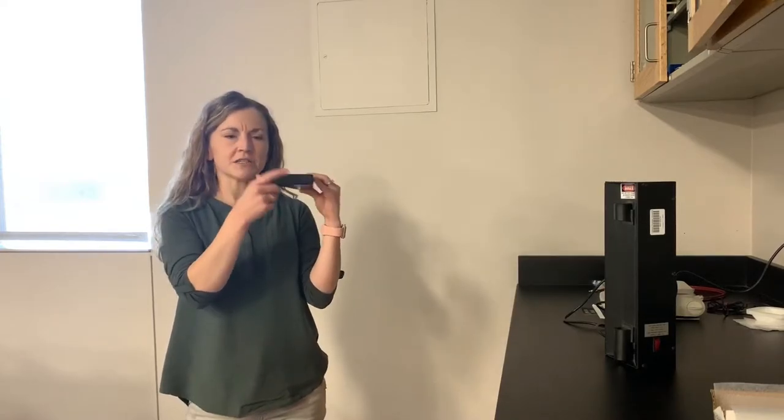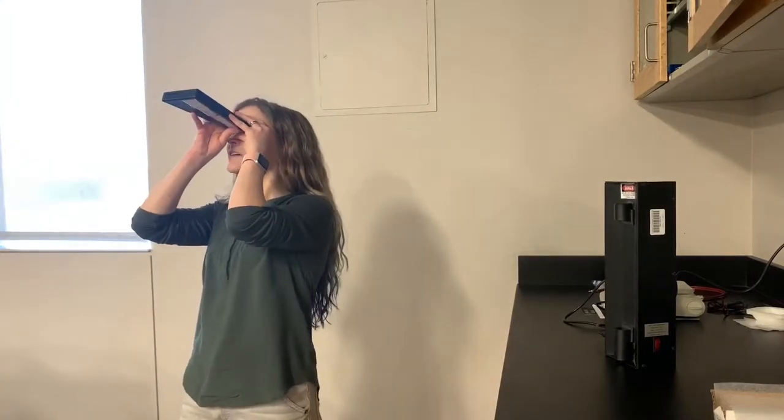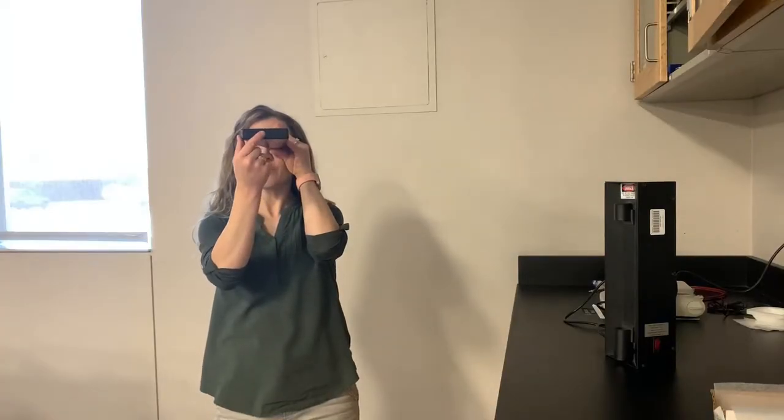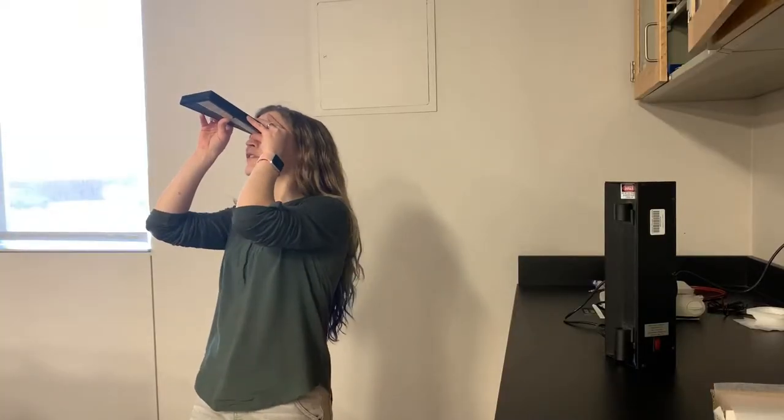And then over here is a diffraction grating lens. Whenever I shine the light into my spectroscope, I can get the light to come in here, and then if I look over this way I can see what the emission spectrum is for the light that I'm looking at.